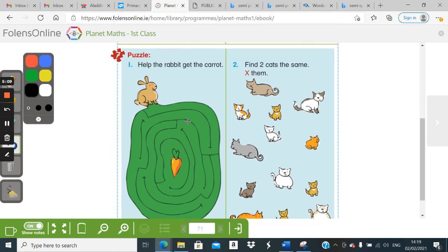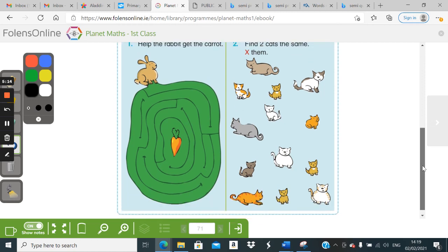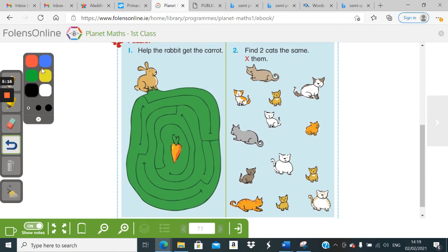And number two. Find two cats that are the same, and mark them with an X. Well, there's lots of very similar-looking cats. I'm just looking straight away, and I'm seeing these two guys at the bottom.